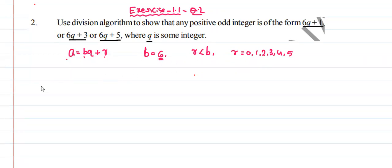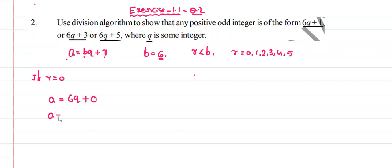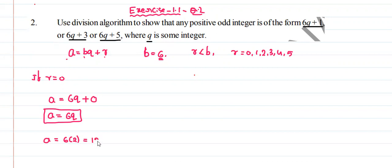If r is equal to 0, then a is equal to 6q plus 0, so a equals 6q. For example, if q equals 2, then a equals 12. This is an even number.